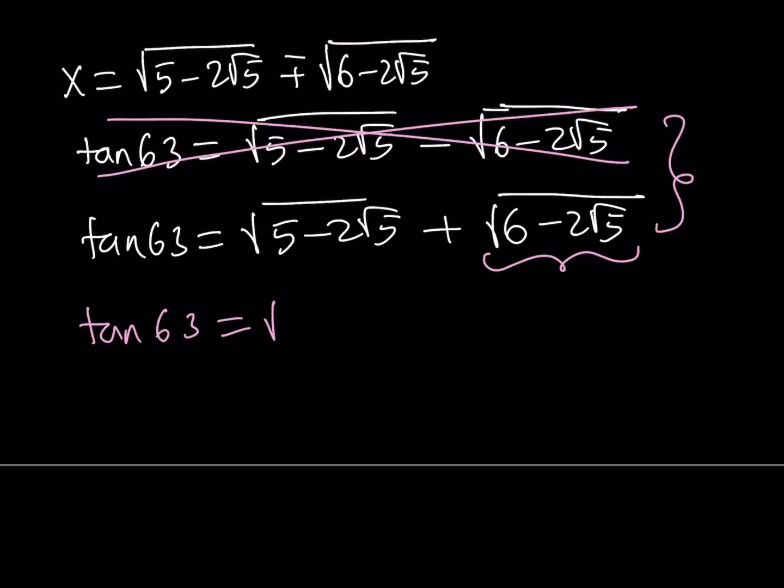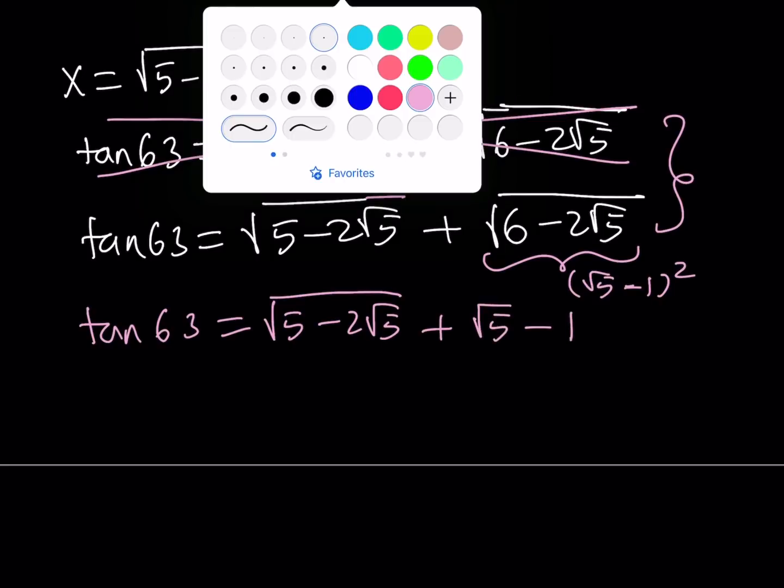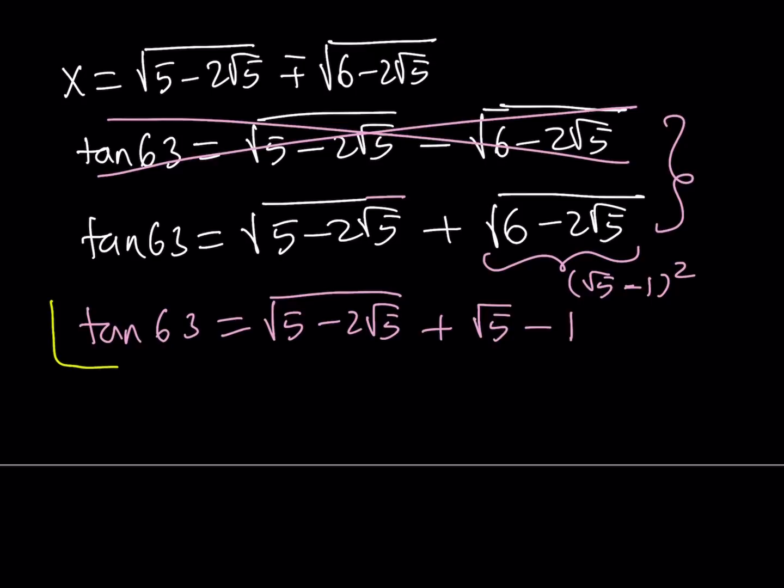Notice that this is equivalent to square root of 5 minus square root of 1, which is 1, squared inside the radical. And, when I square root it, I can just write it as square root of 5 minus 1. And, that is going to be the value of tangent 63 as a radical, which is interesting because we can find the exact value.